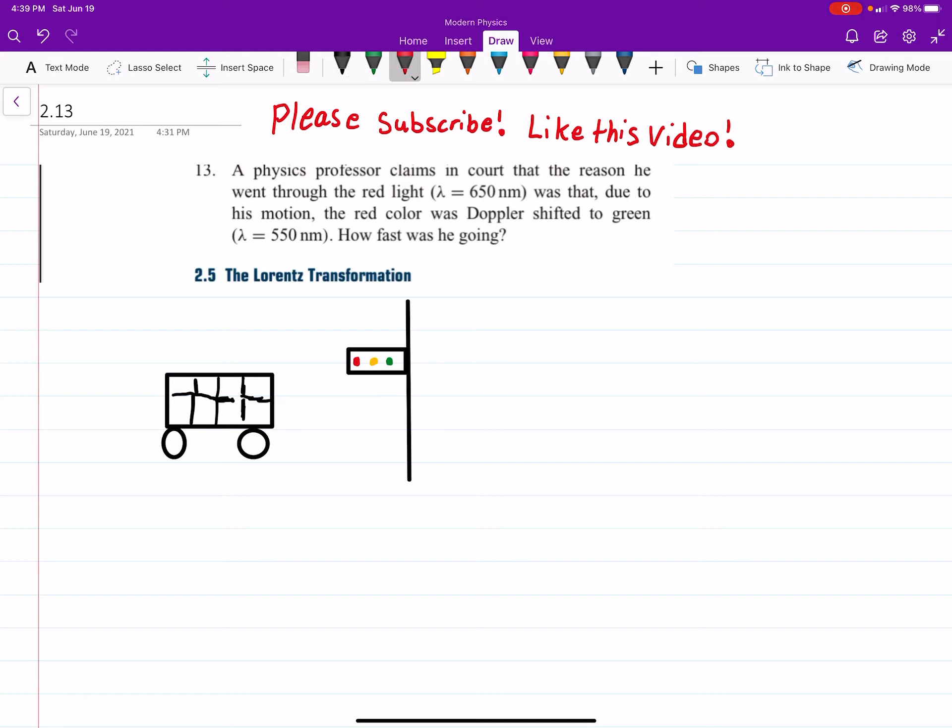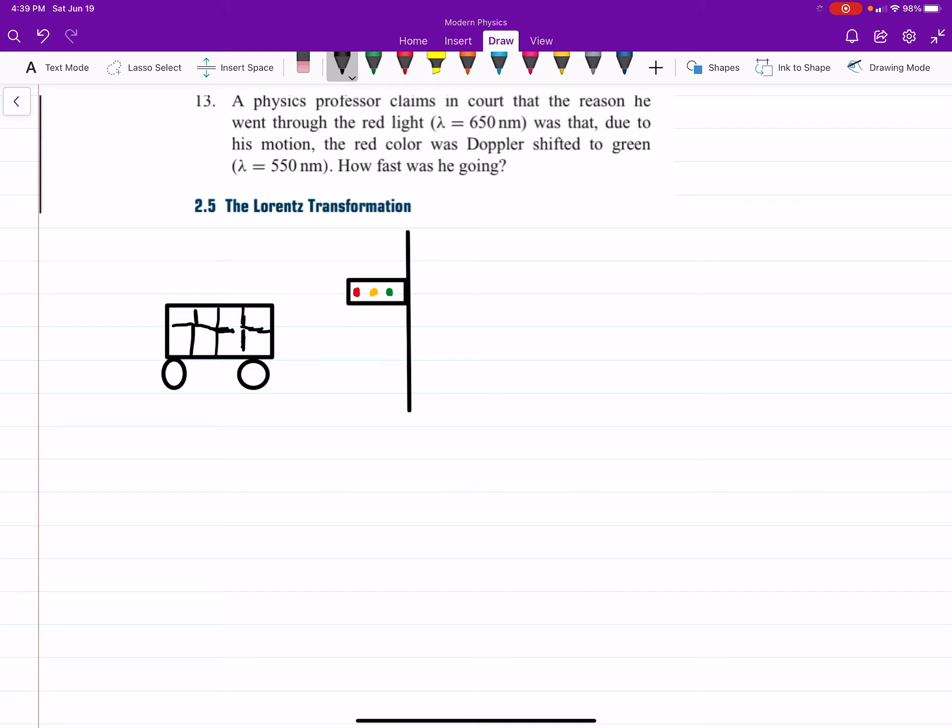So before we work through this problem, if you wouldn't mind, please subscribe and like this video. Helps me out. Alright, so this is my attempt of a drawing of the situation. I know it's not very good, but this is the car going through, and the question is, how fast would he need to be going for his statement to be true?